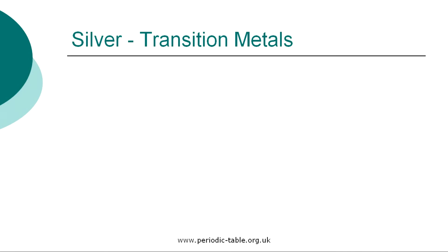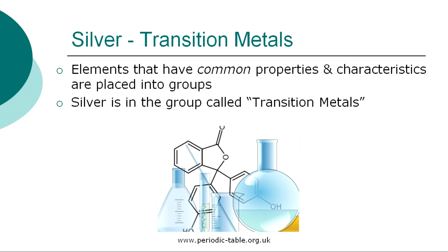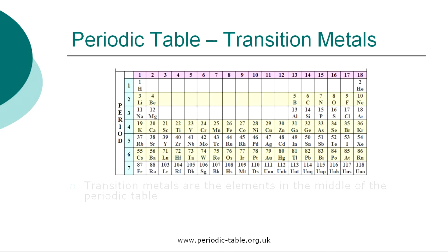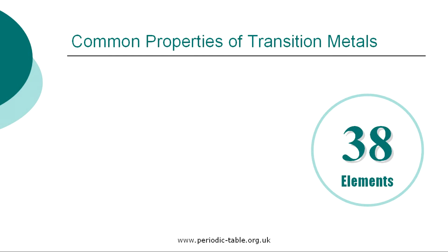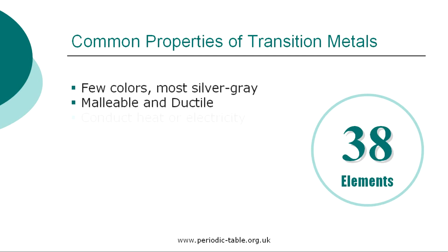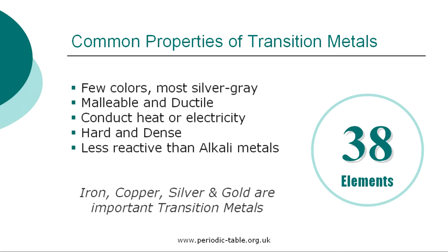Once the properties of an individual element have been identified, it is placed into a group of elements which have common properties and characteristics. Silver is in the group called the transition metals. The 38 elements classified as transition metals are found in the middle of the periodic table in groups 3 through 12. Only a few of the transition metals are colored; most of them are silver gray or silver bluish. As with all metals, the transition elements are ductile and malleable and good conductors of electricity and heat. They are generally hard and dense and less reactive than the alkali metals. Iron, copper, silver, and gold are important transition metals.